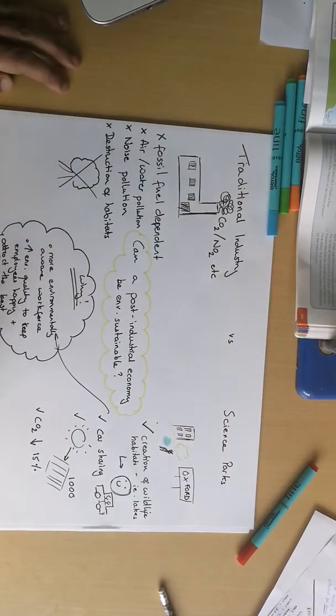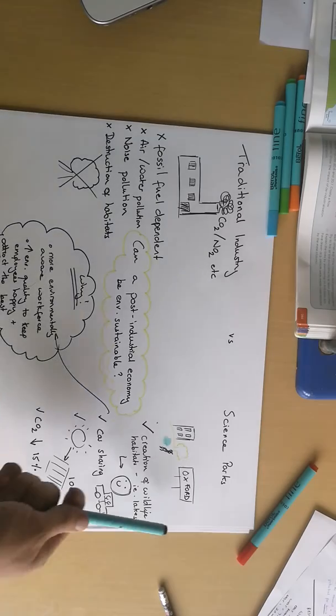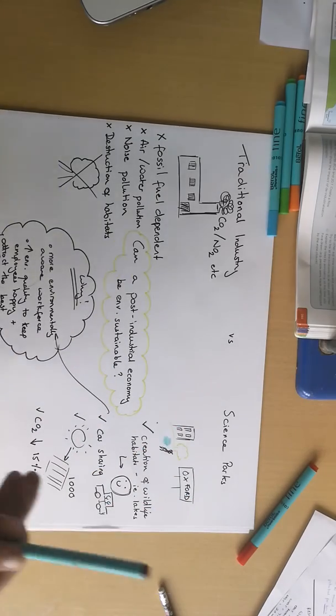What our science parks allow us to do as part of our post-industrial, our modern economy is still make money, but provide a much more environmentally sustainable, long lasting economy. So if we go back to this idea of Oxford Science Park, we're going to use that as our example.